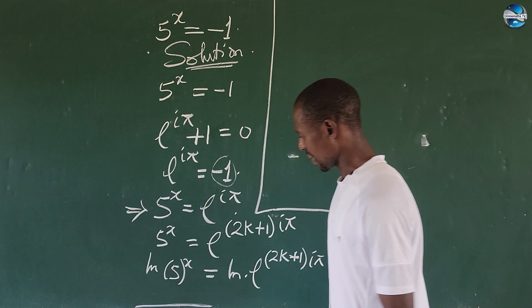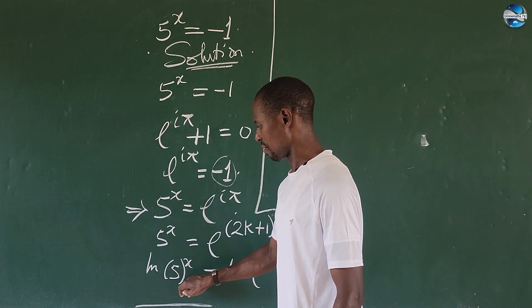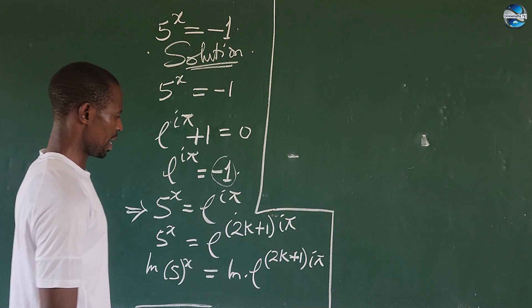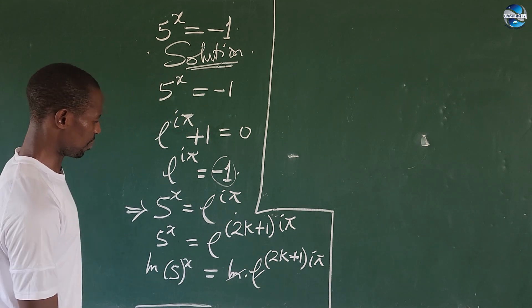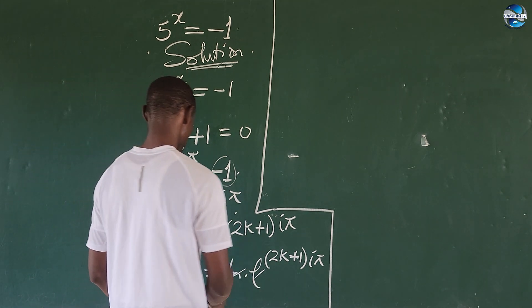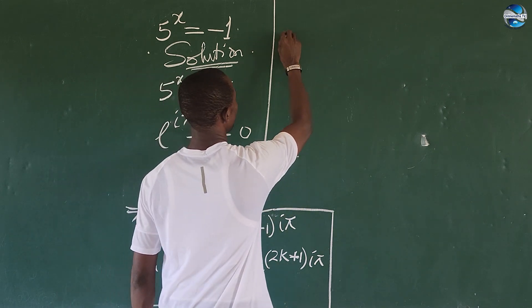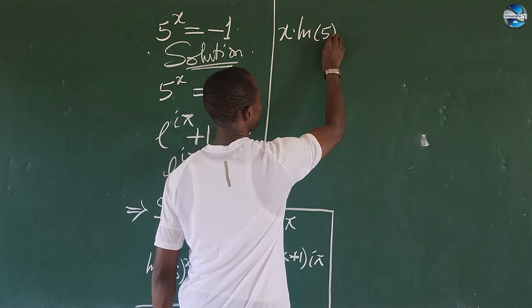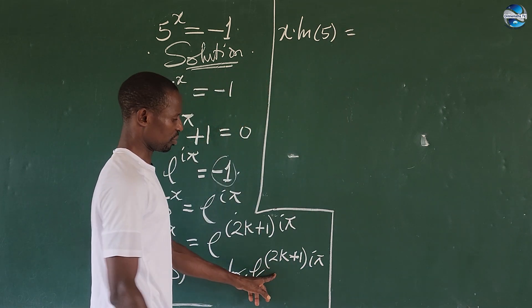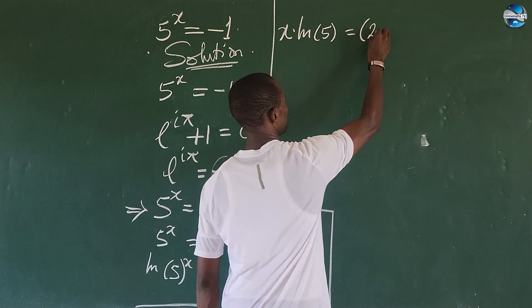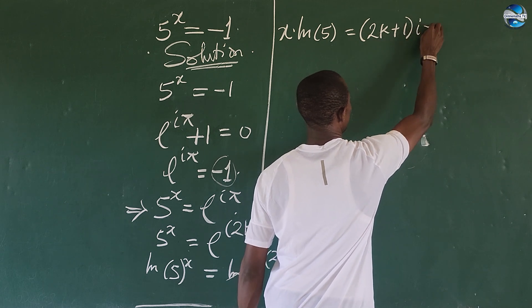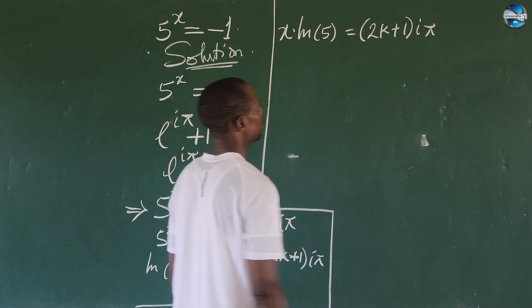So we're going to apply some laws here now. The law of logarithms, we say that we move this part to this side, then this times x, we give us 1. And so moving this backward, we're going to have x times ln of 5. We have here 2k plus 1 bracket times i pi here. We are looking for x.